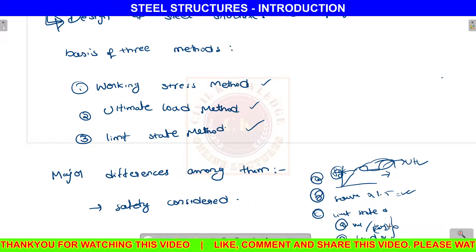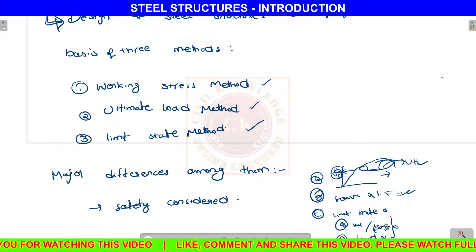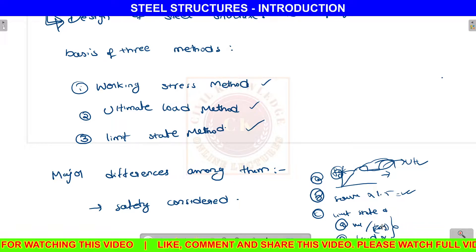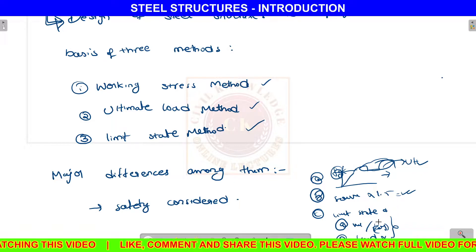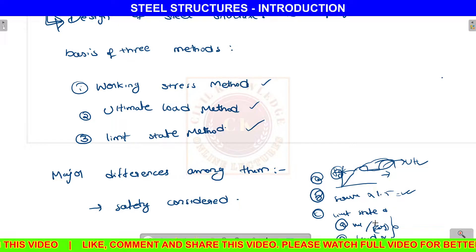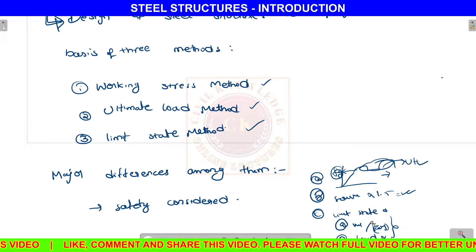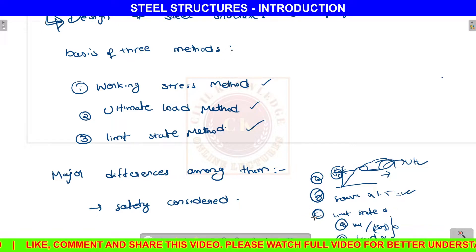So now we have to balance the two in the limit state method. So now we have to balance the three methods based on steel members.